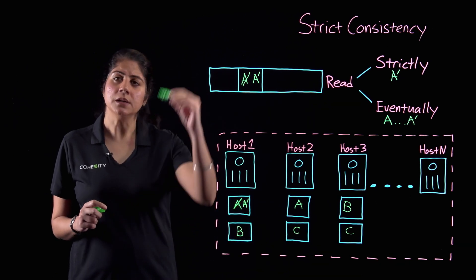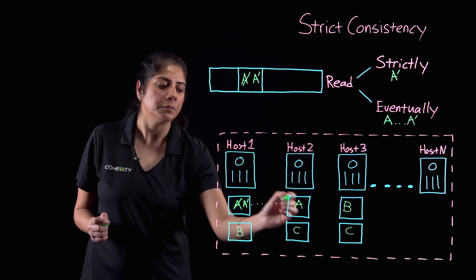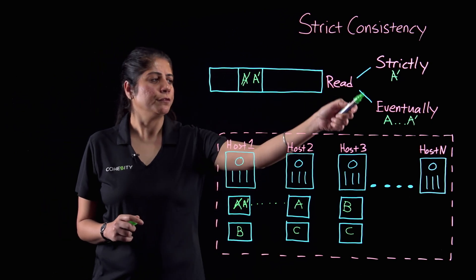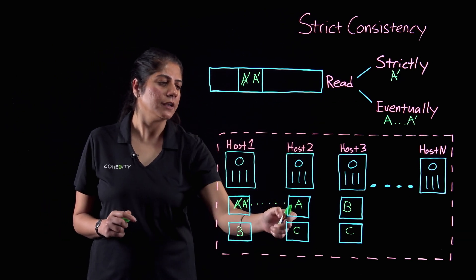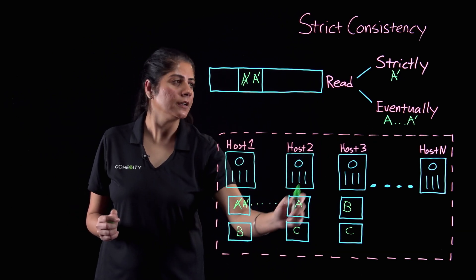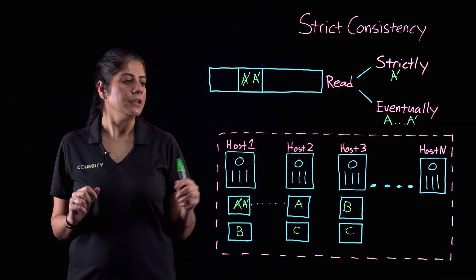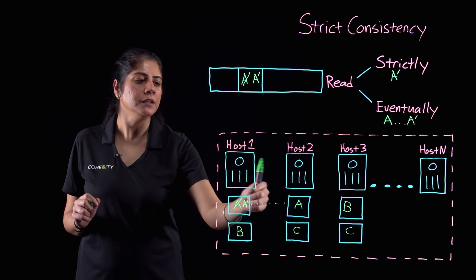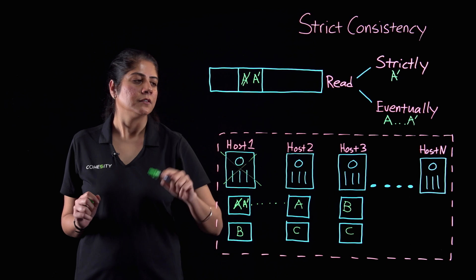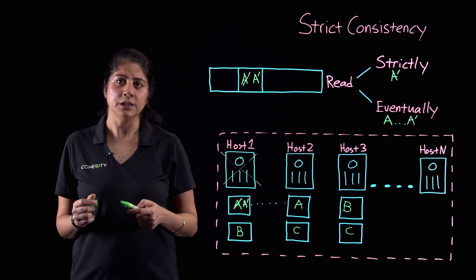But in an eventually consistent system, you may just update one replica to A prime, declare the write done, and then eventually sync the two replicas in the background. So for some time, if you read the data segment from Host 2, you may still get the value A. And if before syncing there was a permanent failure on Host 1, you have lost your update — and that is the problem with an eventually consistent storage system.